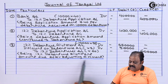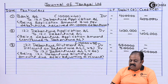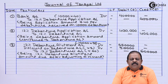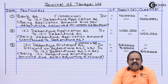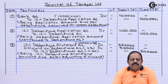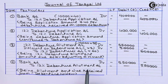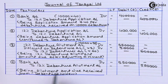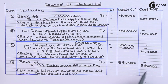This amount is received from all the debenture holders, so the next entry will be for receiving the allotment amount. Bank account debit 5 lakhs 50,000; to 12% debenture allotment account 5 lakhs 50,000, being allotment amount received from debenture holders.